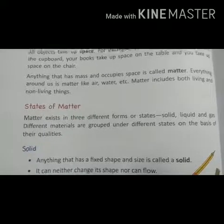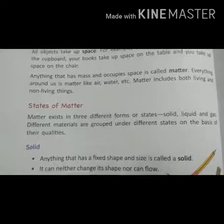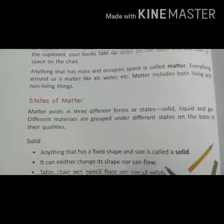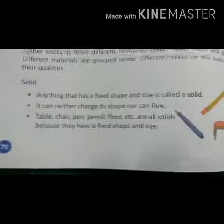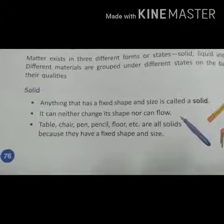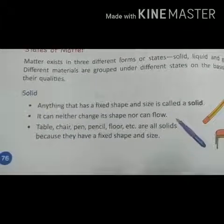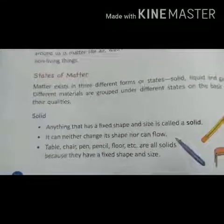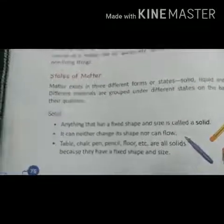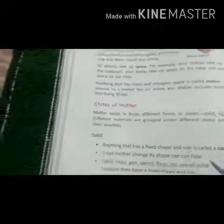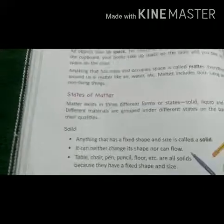Let us study the features of a solid. Anything that has a fixed shape and size is called a solid. This pen is a solid because it has a fixed shape and a fixed size, and it cannot flow.